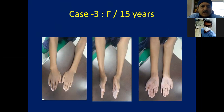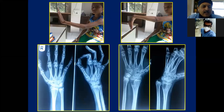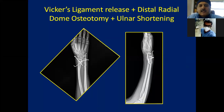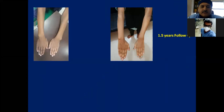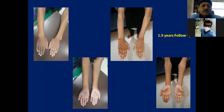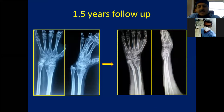Case 3: a 15-year-old girl, about a year post-menarche — growth finished. Left side ulnar prominence and restricted wrist dorsiflexion. X-ray shows ulnocarpal crowding. Treatment: Vickers ligament resection, dome osteotomy of radius, and ulnar shortening. Ulnar shortening was fixed with a wire and the distal radio-ulnar joint with a transverse K-wire. At one and a half years follow-up, the bump resolved and cosmetic correction and range of motion improved. Some ulnar inclination remains — residual inclination should be corrected more aggressively as it can lead to early arthritis.